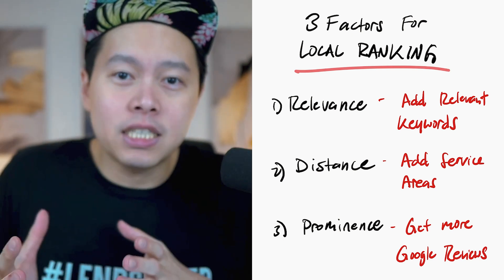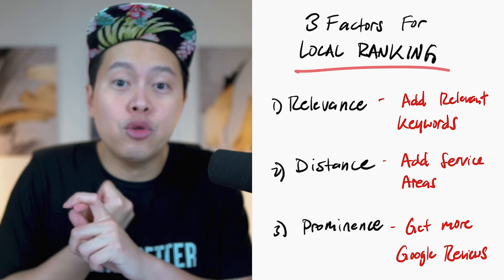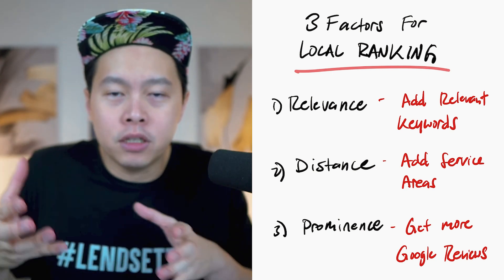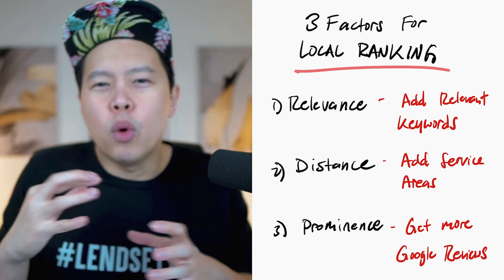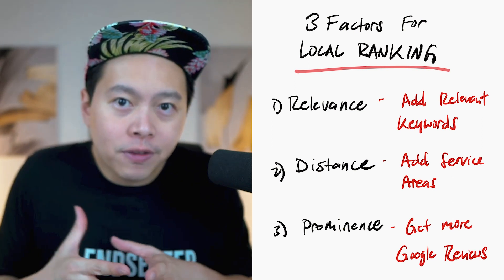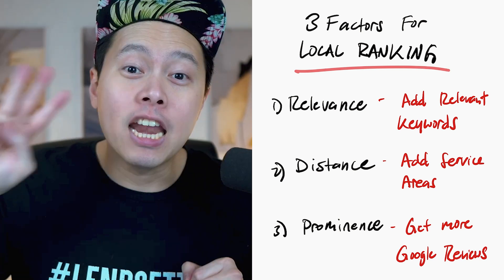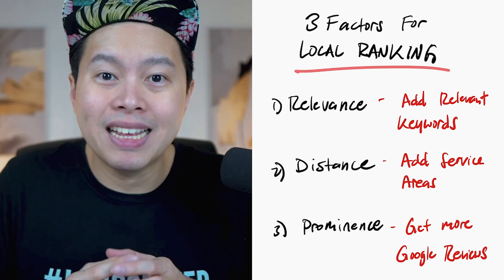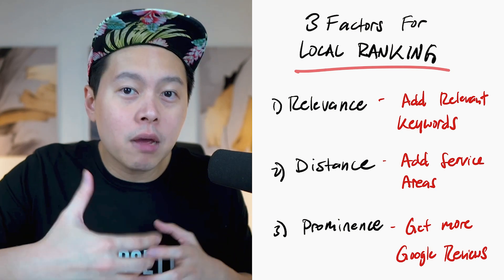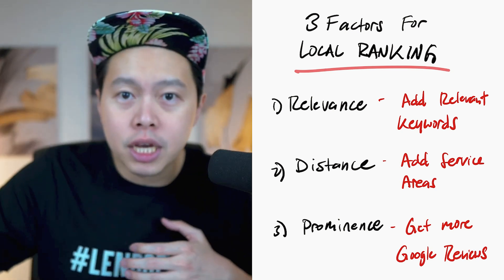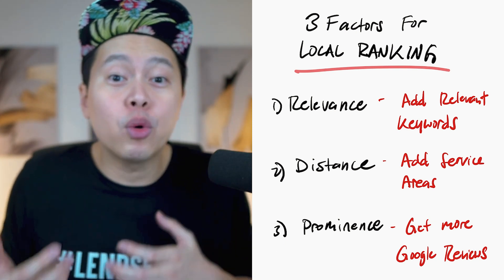The second factor is distance. Because this is local ranking, it's actually easier to rank since you have less competition within a geographical area. Depending on where you are, you want to add specific cities and counties to your listing to help your local ranking. Number three, and most important, is prominence. Google wants to see — before recommending you to searchers — that you are actually trustworthy. The easiest way to demonstrate this is to get more Google reviews.